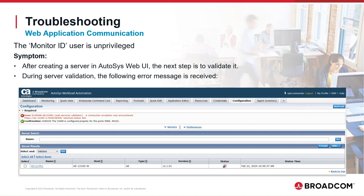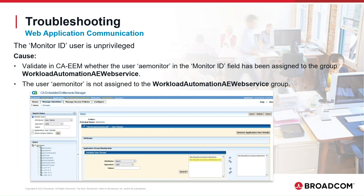Now we are going to review some problems related to Autosys web services. The next example is a problem regarding the privileges of the monitor ID user when defining a server in the Autosys Web UI. After creating a server, we attempted to validate it and received the following error: Web services validation — a connection exception was encountered. The web services URL validation fails with status code 403. The error is due to the monitor user not having the required CA EEM permissions on the Autosys web service. We log into CA EEM and validate whether the user AE monitor, the monitor ID user defined in the server, has been assigned to the Workload Automation AE web service application group. The user AE monitor is not in the group.